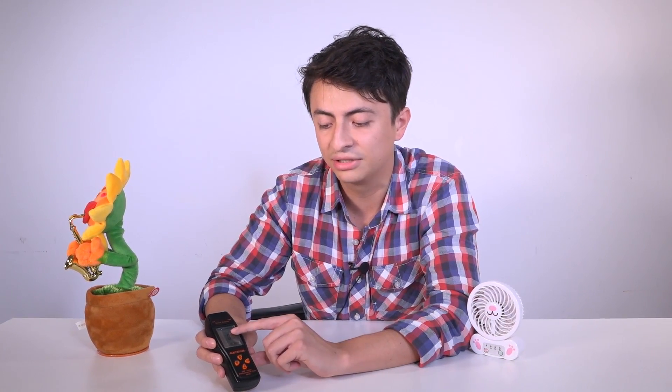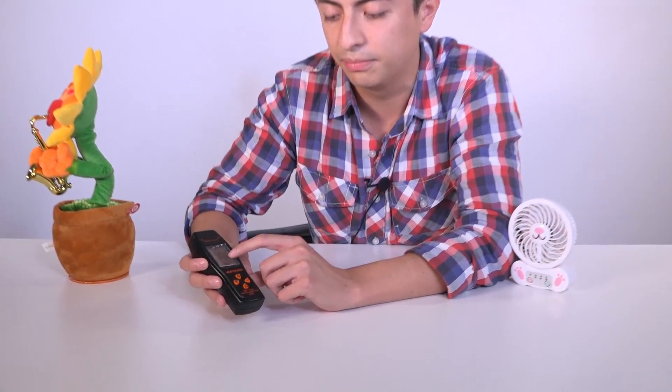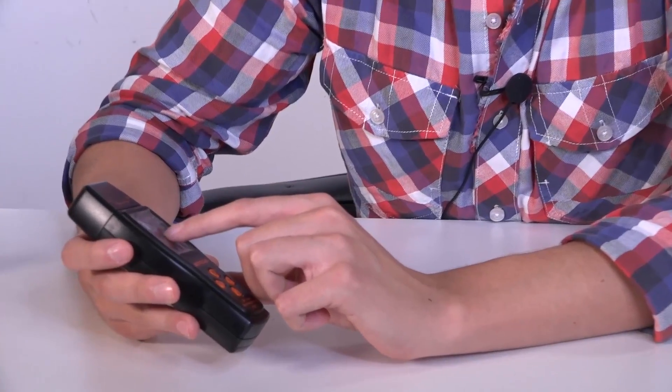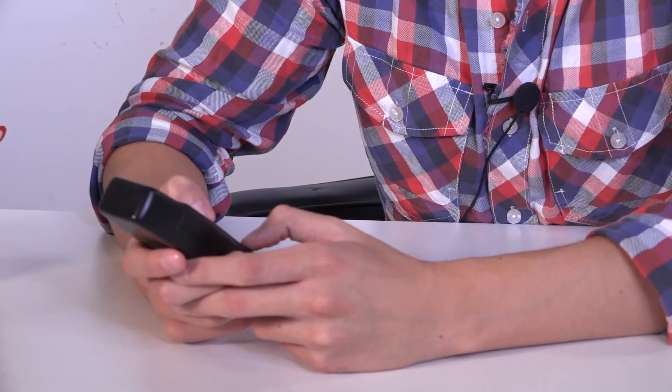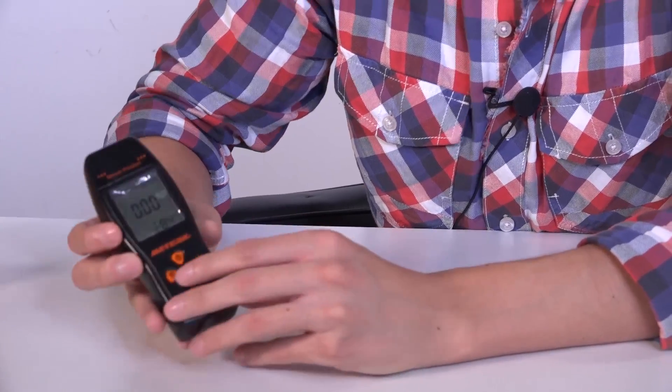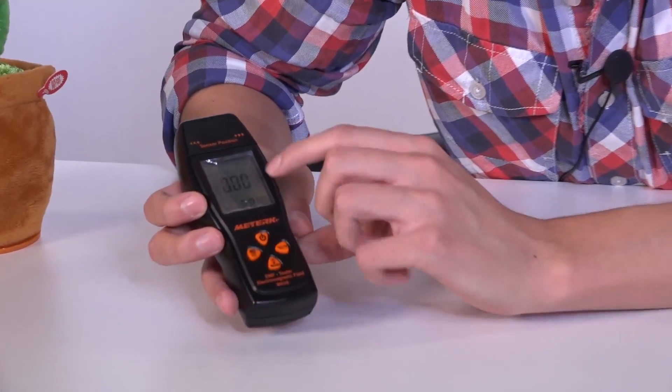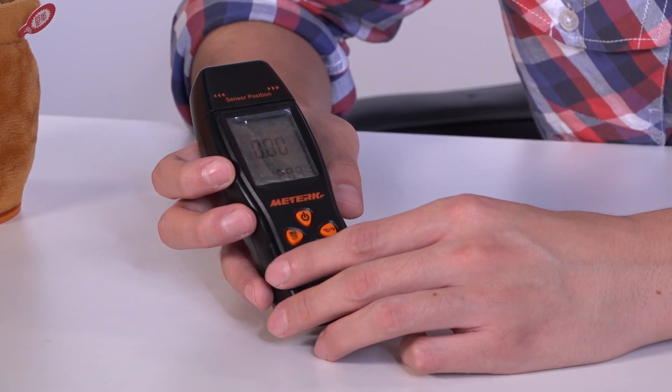For example, right now we have it in milligauss, the beeping sound on and our alert will be at 0.5 microteslas, which is 5 gauss. Let's just use this button to change to microteslas. So we have the same measurement. Right now it is not showing any measurement because we don't have anything to measure right now.